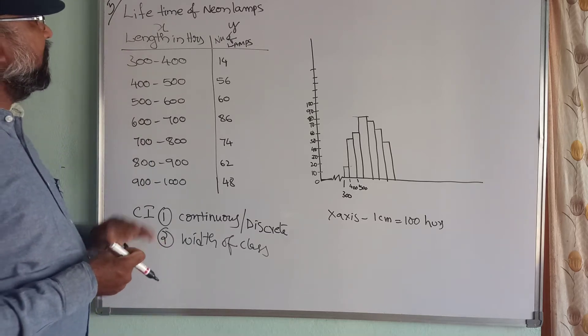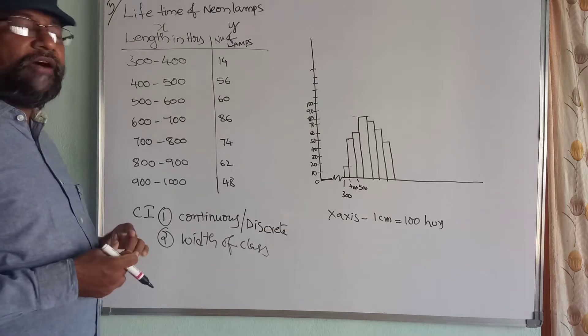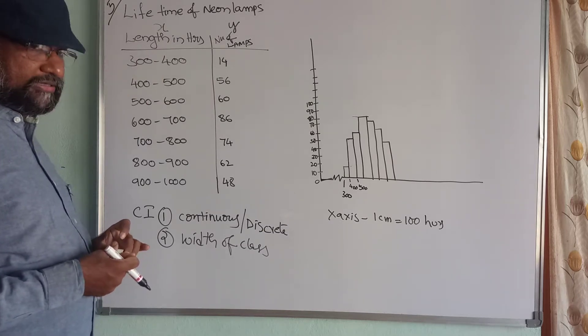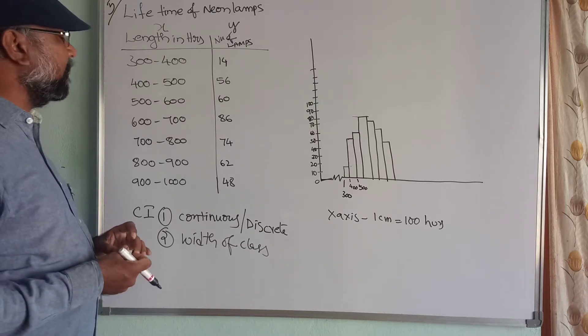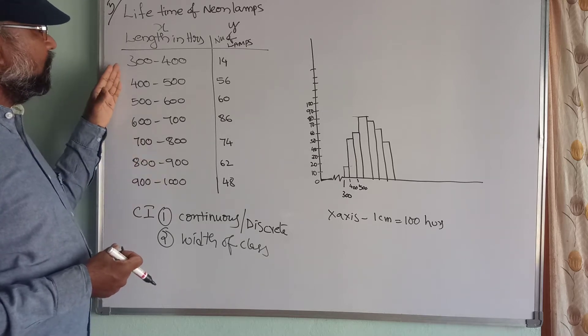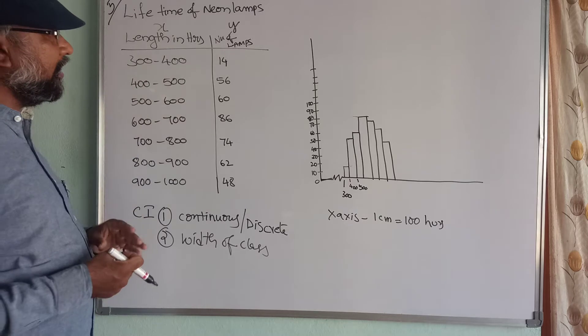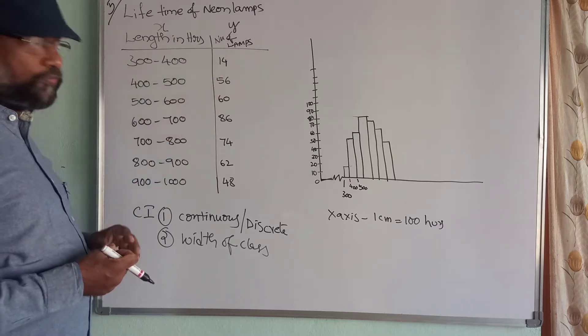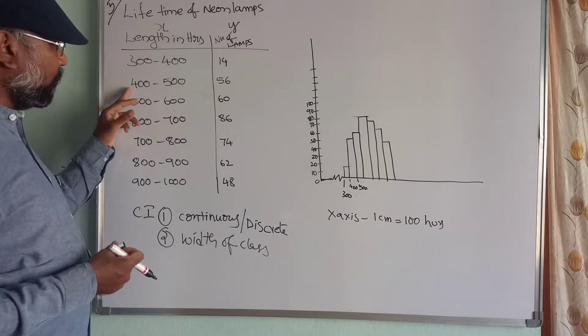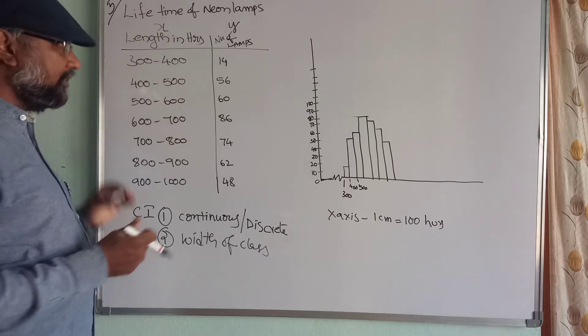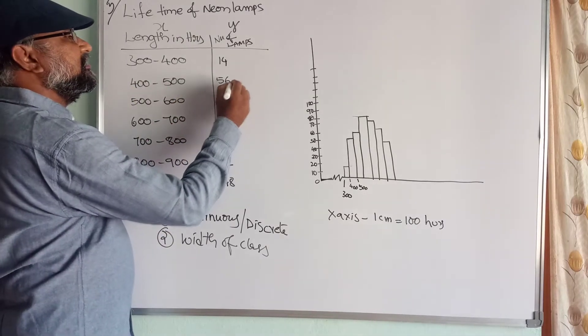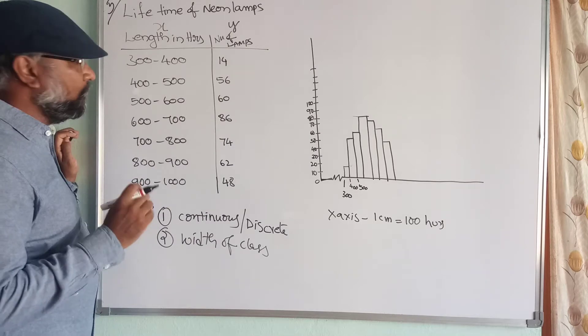Here length in hours, how many hours the bulb works after it starts working. So 300 hours to 400 hours, 40 bulbs worked. And 400 hours to 500 hours, 56 bulbs worked.